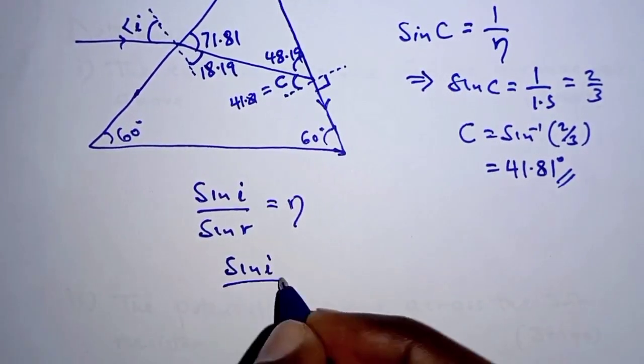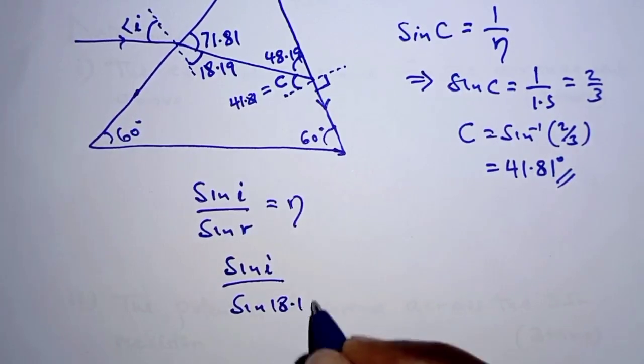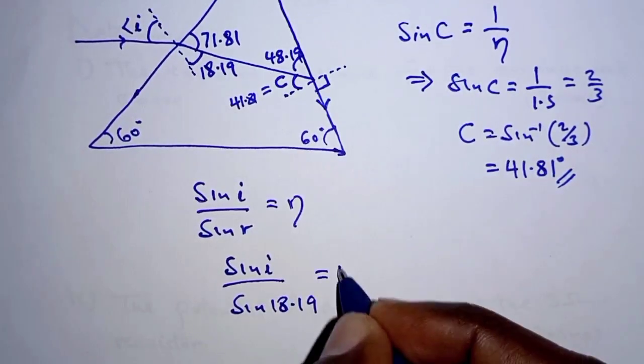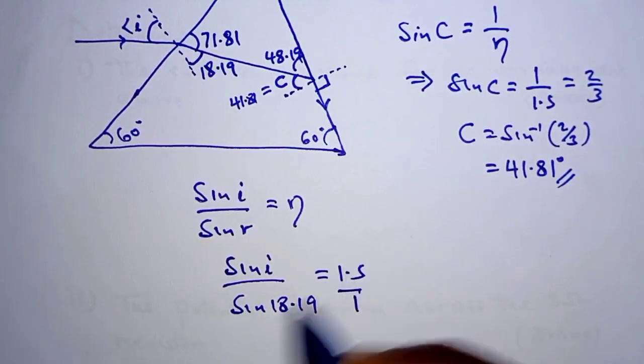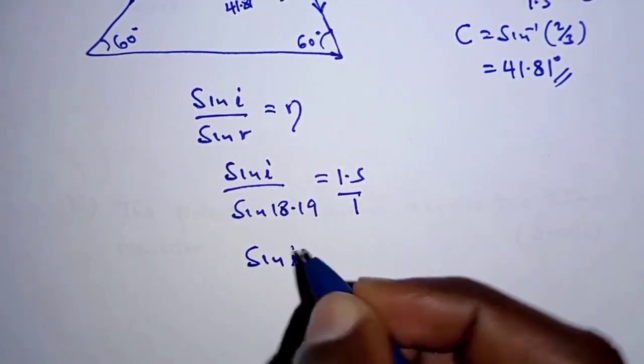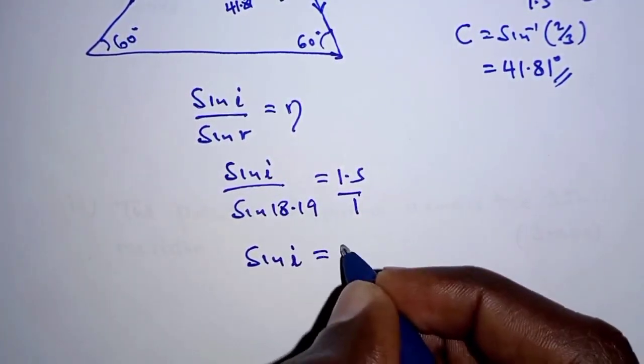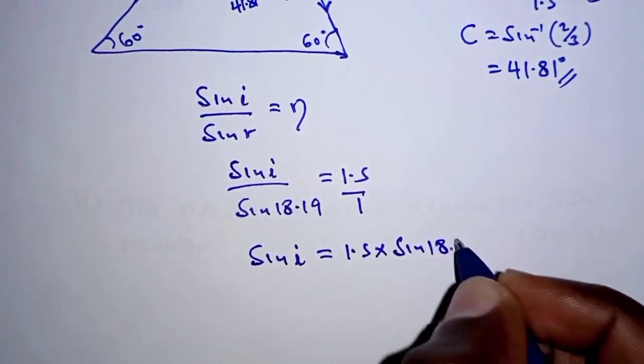So we are going to have sine of I over sine of R, and R is 18.19, equals 1.5. Now if you have this over 1 and cross multiply, we are going to say sine of I, that is angle of incidence, is equal to 1.5 times sine of 18.19.